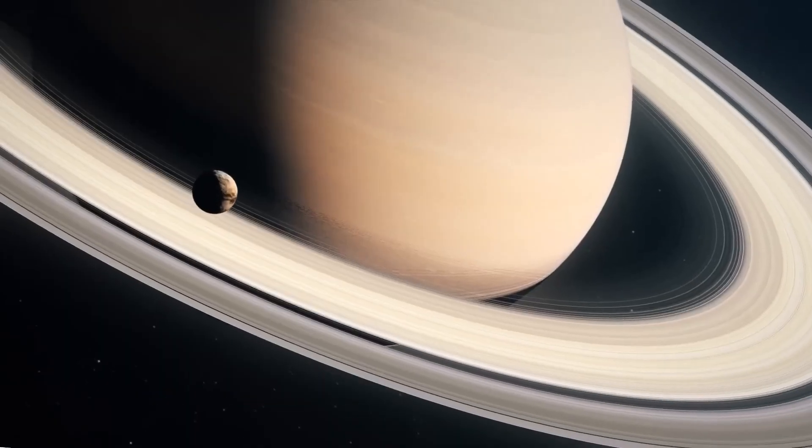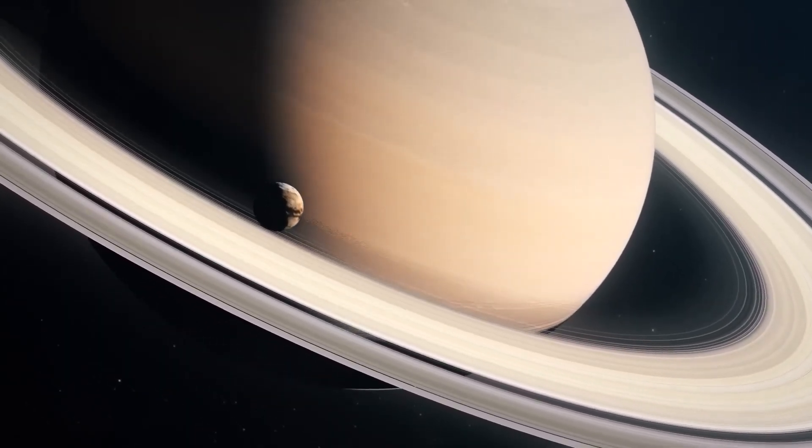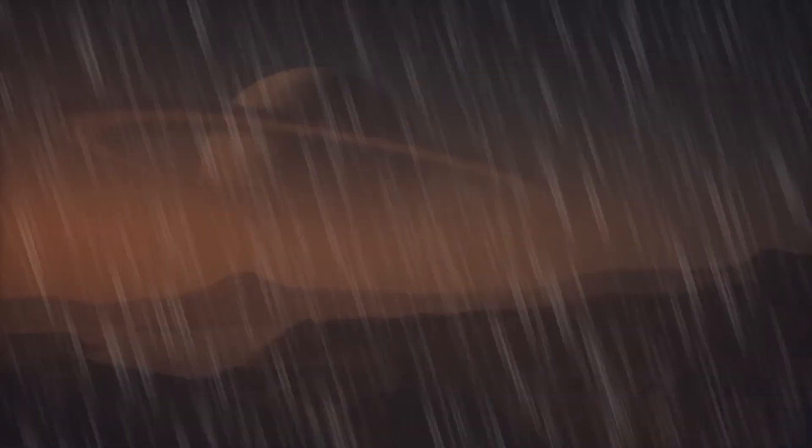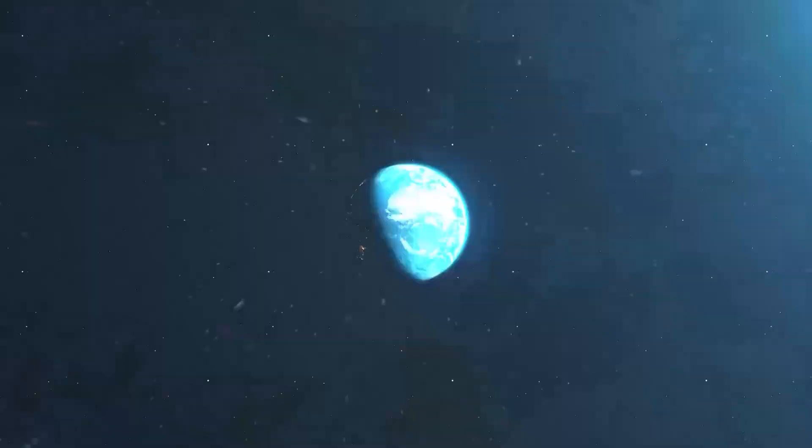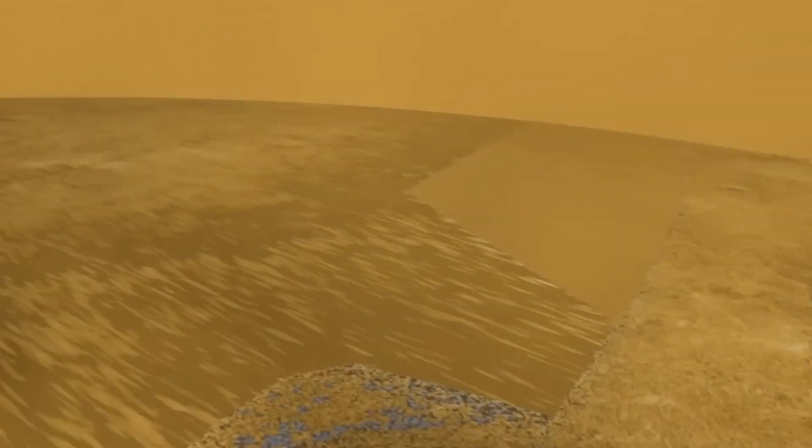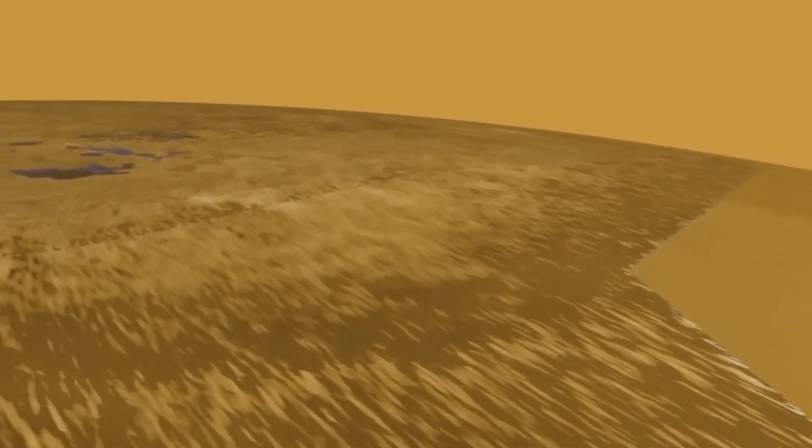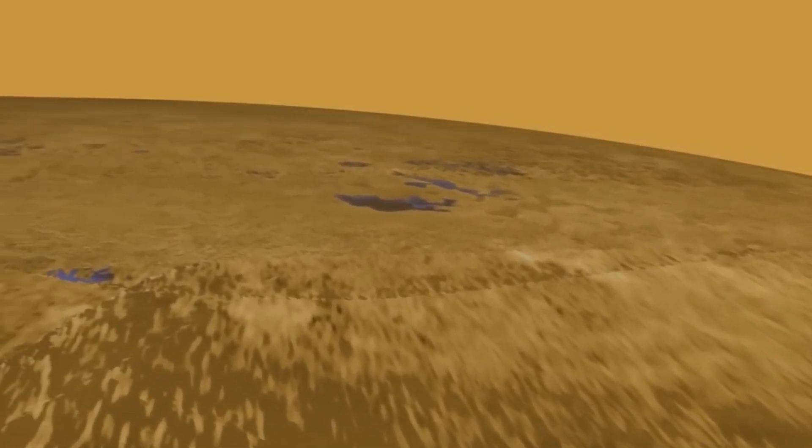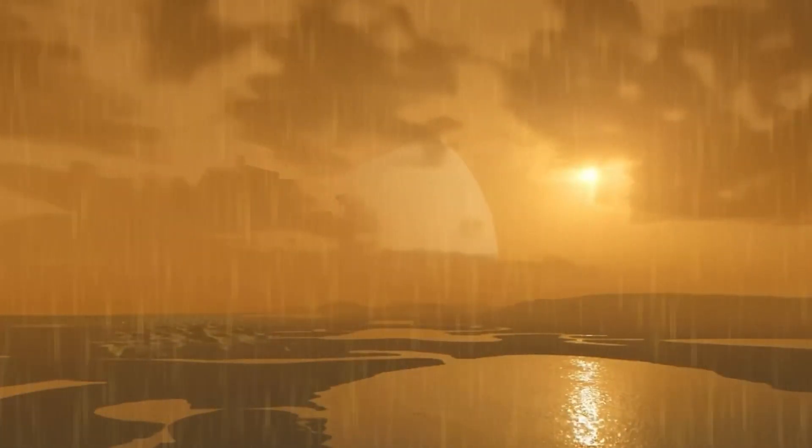Titan, with a colossal diameter of over 5,000 kilometers, stands as the second-largest moon in our solar system. Its atmosphere, though sharing some similarities with Earth's in its nitrogen composition, diverges dramatically by featuring substantial quantities of methane, ethane, and an array of organic compounds. These gases give rise to a thick and hazy atmosphere, obscuring the moon's surface from our view.